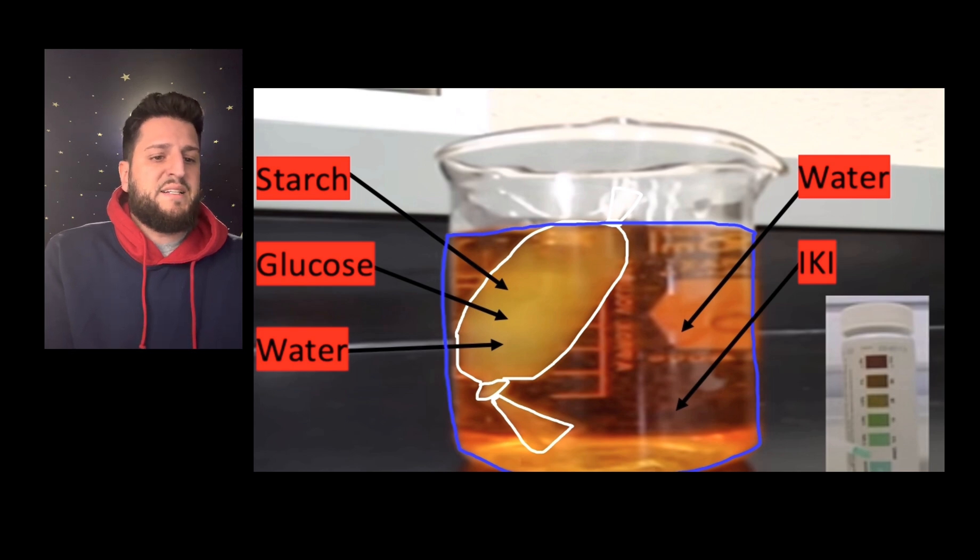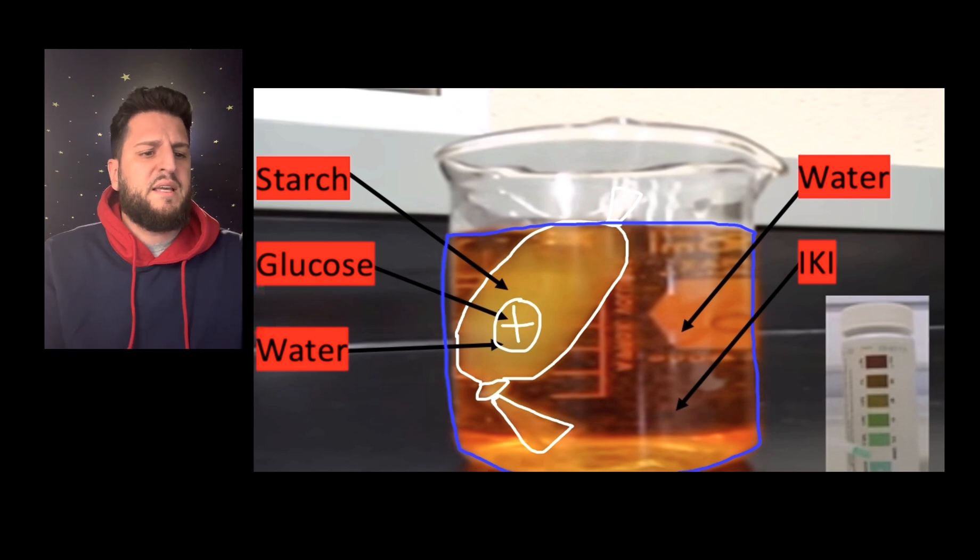To start, you would take a test strip and insert it into the fluid. It would start as a blue color and then can move all the way up to a red color. If we took a test strip and put it inside the dialysis tubing for the presence of glucose, we would get a positive test result because there is glucose inside the dialysis tubing. If we were to take a test strip and test the outside of the dialysis tubing, we would get a negative reading for glucose.